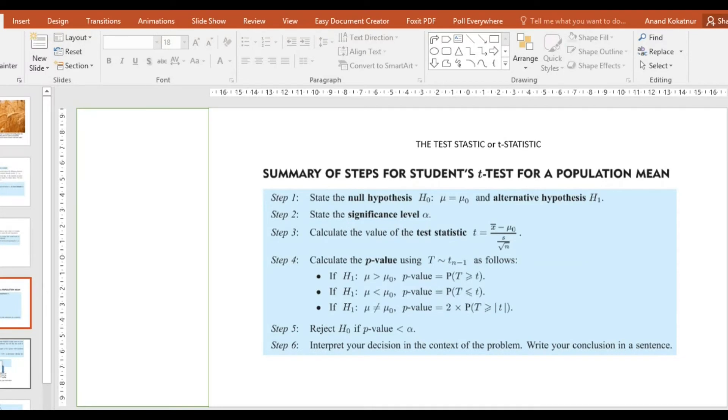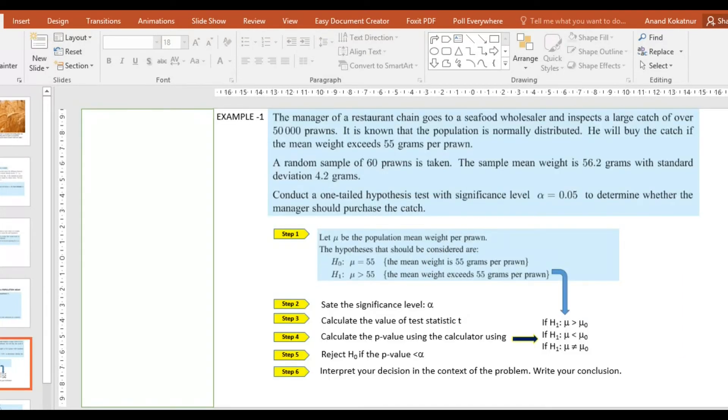Let's look at an example now. The manager of a restaurant chain goes to a seafood wholesaler and inspects a large catch of over 50,000 prawns. It is known that the population is normally distributed. He will buy the catch if the mean weight exceeds 55 grams per prawn. A random sample of 60 prawns is taken. The sample mean weight is 56.2 grams and the standard deviation is 4.2. The significance level is given to us as 0.05.